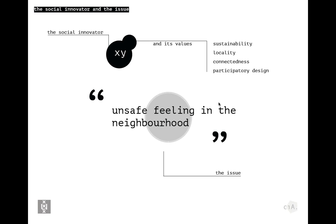Today I'm going to walk you through a case study around a social innovator who is a partner of ours and was dealing with a conflict problem. This organization had well-established values — sustainability, locality, connectedness, and participatory design — and they knew they had to do something around an unsafe feeling in the neighborhood.